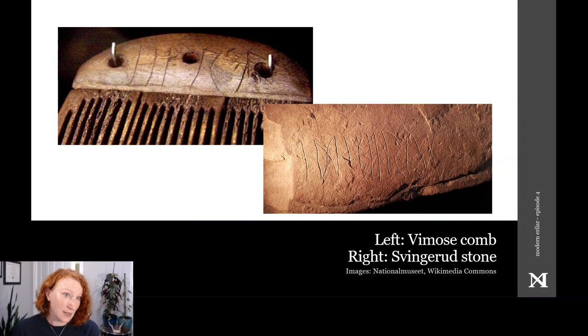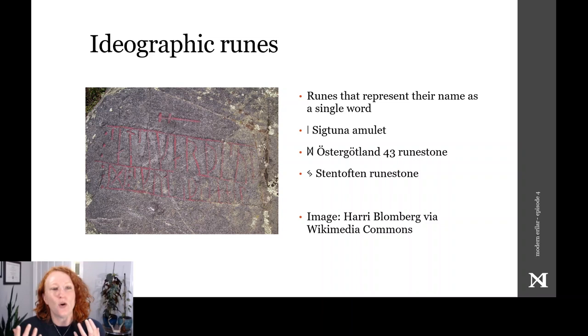For example, we know at least three reasonable examples of an ideographic rune, or Begriffsrünn, to use the German term, where the rune represents its name as a word unto itself. An inscription on an amulet from Sigtuna has three Ís runes, and then immediately goes on to say Ís Ís will, as a symbol that creates an action. Then Ísteryötlund 43 contains an Elder Futhark Dagas rune, either indicating the name Dagr or the word day. And then a single Jæra rune represents its name, Jæra, on the Stentoften rune stone, dating perhaps to the 7th century.